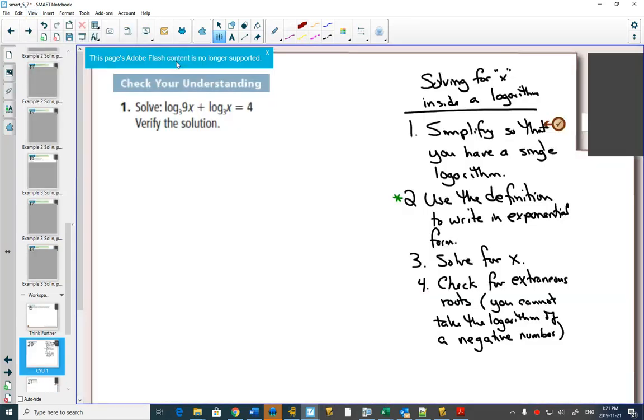So, we have to use our log laws to simplify this to get a single logarithm. Do I have a log law that says a log plus a log? Yes. Adding two logarithms means I can multiply. So, it'll be 9x times x, which will become 9x² equals 4.